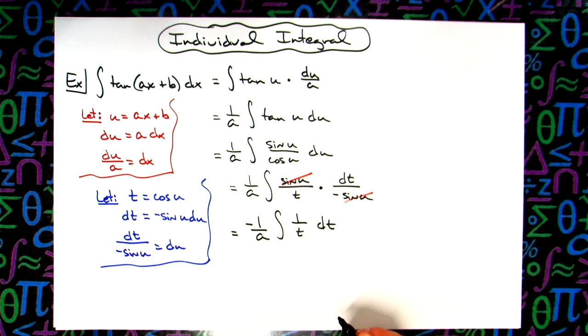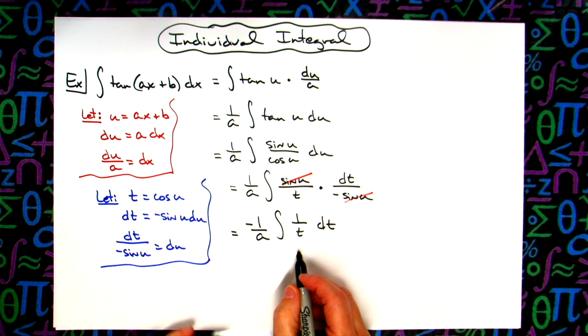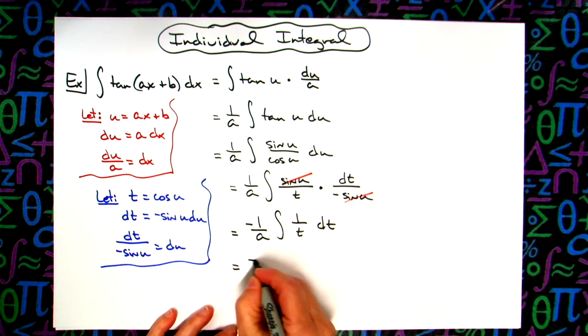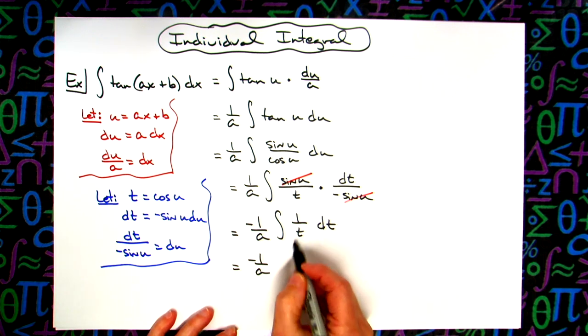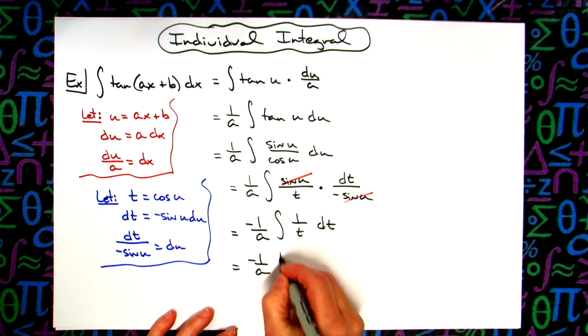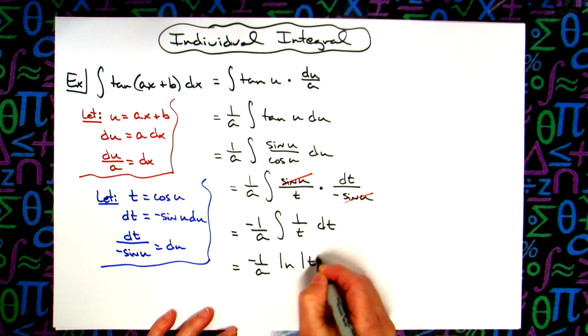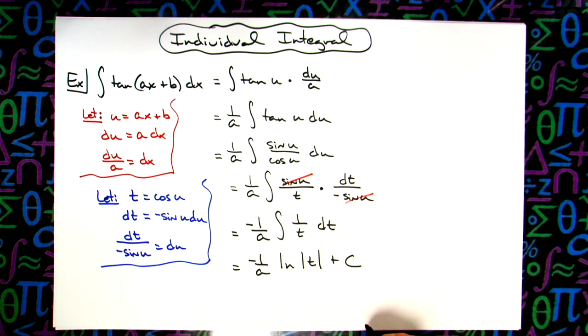Hopefully at this point you have this integral memorized. The negative 1 over a stays in front. The integral of 1 over t is natural log absolute value of t plus c.